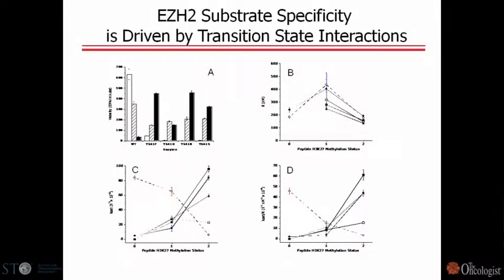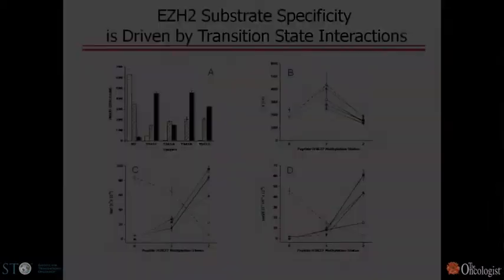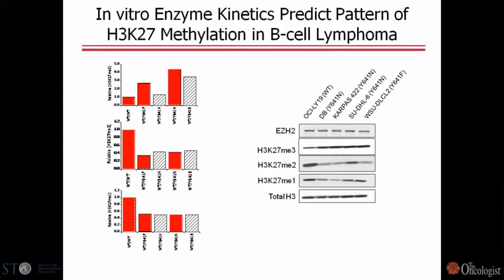The difference in substrate specificity is all within the transition state, not within the ground state, and this gives us some avenues for selective drug discovery. It also allows us to take the KCAT and KM values to derive an equation predicting levels of mono-, di-, and trimethylation in cells. The simulations predict that trimethylation would be up in heterozygous mutant cells relative to wild-type, with dimethylation and monomethylation down. When we grew wild-type or mutant cells, we got exactly the pattern expected based on the steady-state kinetic simulations.